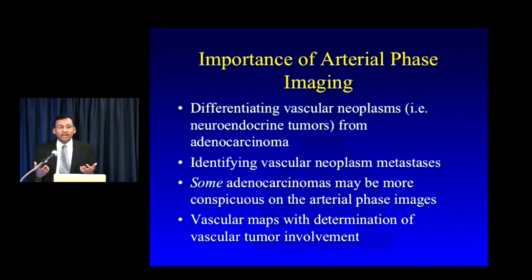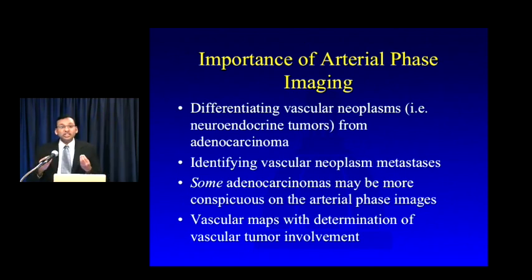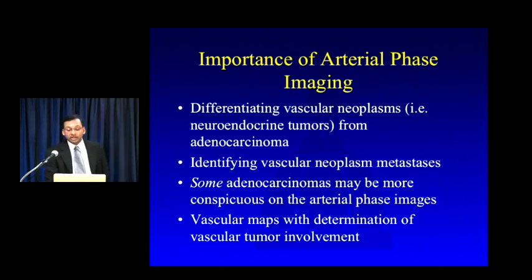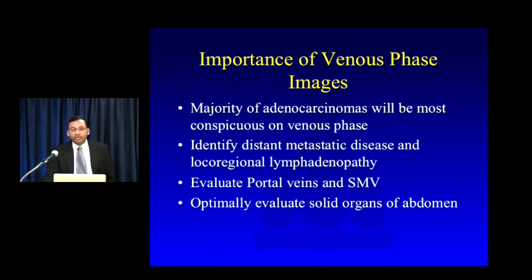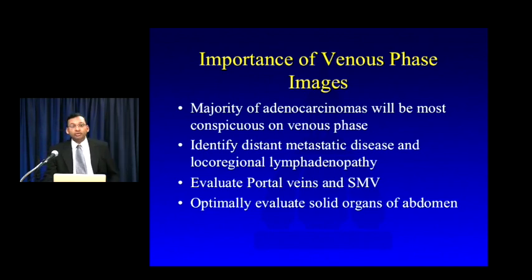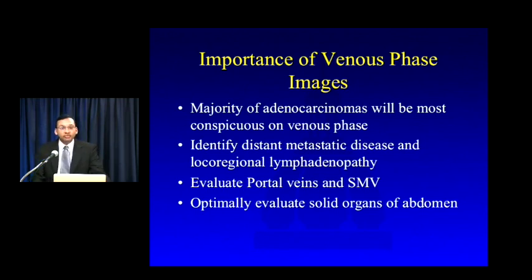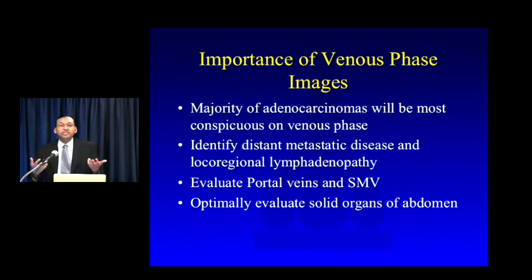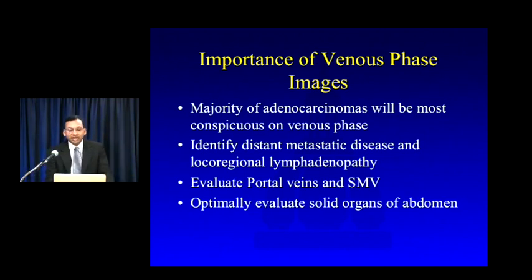Even once a lesion is identified, vascular mapping helps determine vascular tumor involvement — critical for adenocarcinoma. The distinction between subtle abutment versus full 360-degree encasement of the SMA is quite significant for resectability. The venous phase is most important for adenocarcinoma: the vast majority are most conspicuous then, and identifying metastatic disease — especially hepatic and local regional lymphadenopathy — and assessing portal vein and SMV involvement for resectability is best done on venous phase images. You must also evaluate all solid organs, best done on the venous phase.